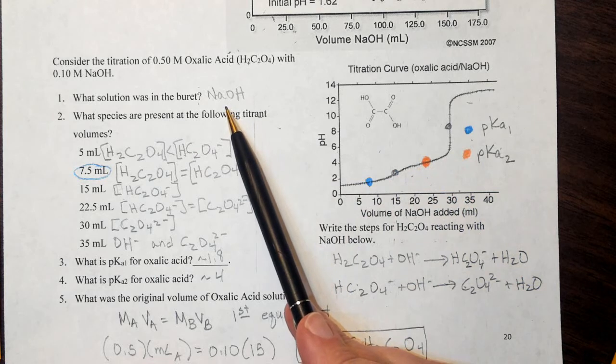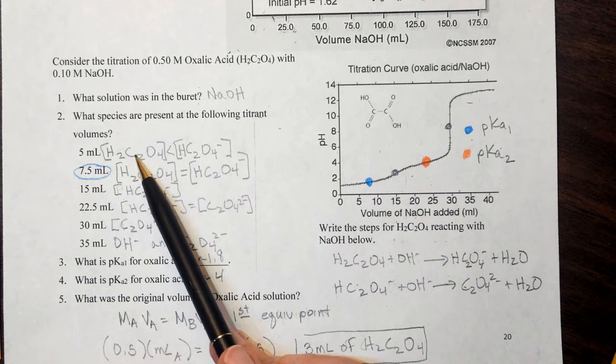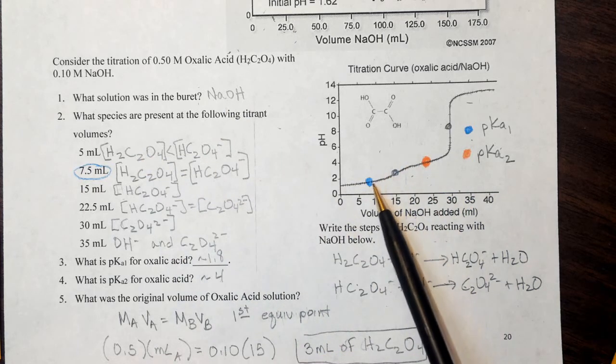The solution in the burette was sodium hydroxide. I know that because the pH started low. At 5 mLs, I am before the half equivalence point.